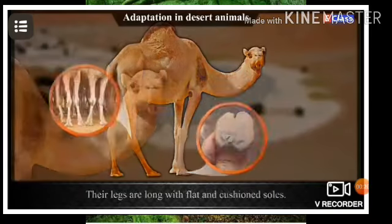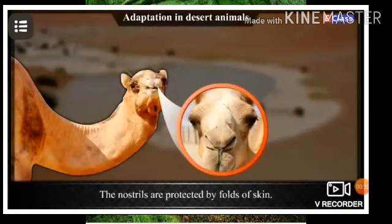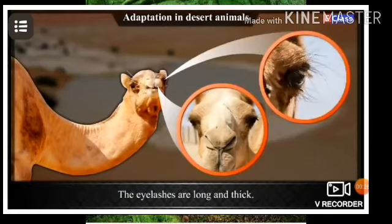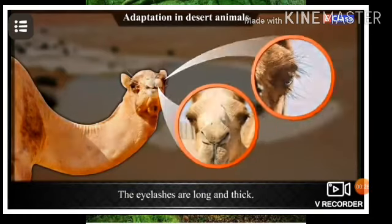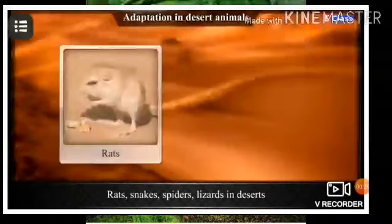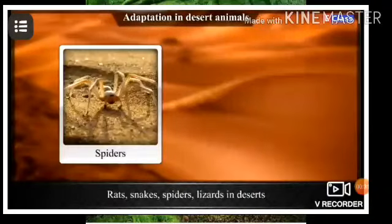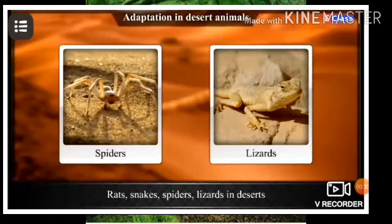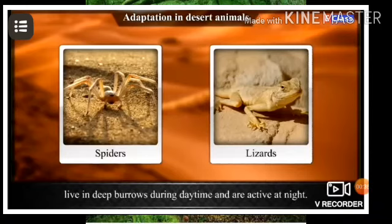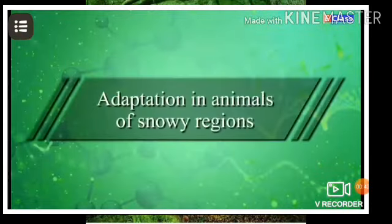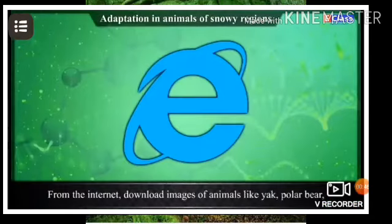In desert animals, the nostrils are protected by folds of skin, and the eyelashes are long and thick. Rats, snakes, spiders, and lizards in deserts live in deep burrows during the daytime and are active at night.